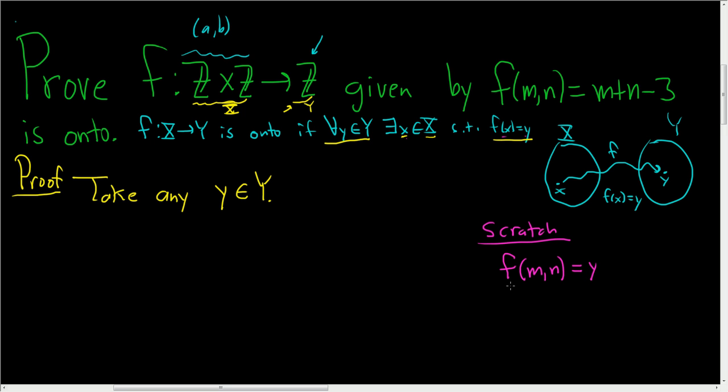So what is f(m,n)? Well, that's m plus n minus three, right, using the formula for f. And that's equal to little y. Okay, we want to solve for m and n. So we get to pick, right, we get to decide what they are, so that this equation is true, we can just make up numbers.